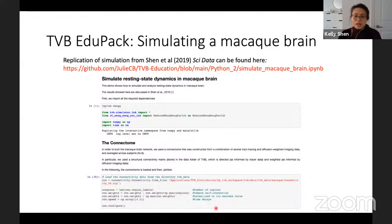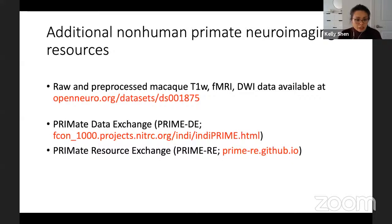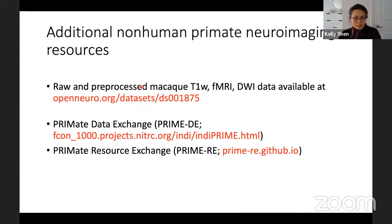For those interested in non-human primate neuroimaging, the MRI data used to create the virtual macaque brain and the fMRI data used to fit the model are available on OpenNeuro, including both raw and processed imaging data. The Primate Data Exchange and Primate Resource Exchange are also really good resources of both data and tools specific to primate neuroimaging.